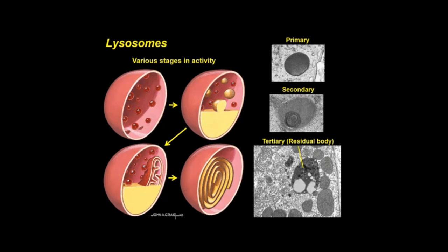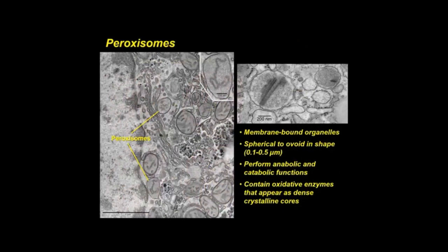Lysosomes are also an intracellular digestive system for organelle turnover and aid in self-destruction of cells. Tay-Sachs disease is a genetic and often rapidly fatal lysosomal storage disease. Peroxisomes are membrane-bound organelles, spherical to ovoid in shape and 0.1 to 0.5 micrometers in diameter, especially prominent in hepatocytes and proximal tubule cells of the kidney. They perform various anabolic and catabolic functions and contain oxidative enzymes that appear as dense crystalline cores.